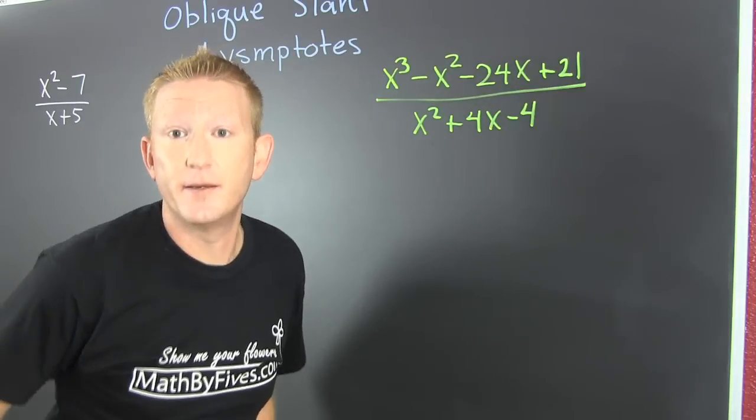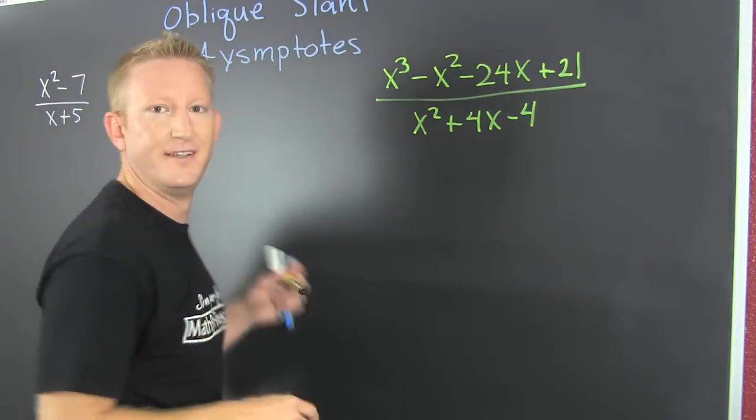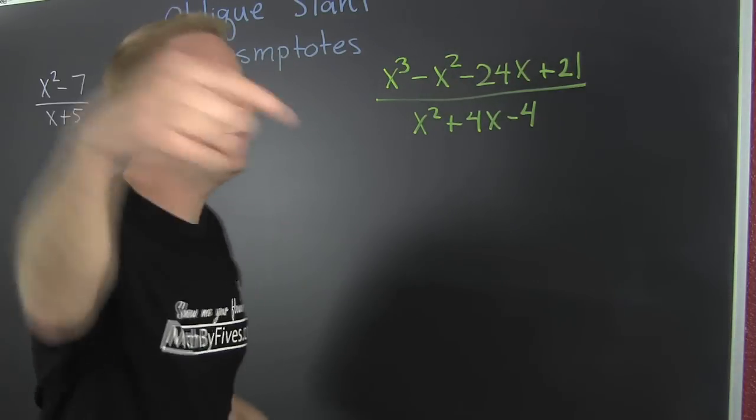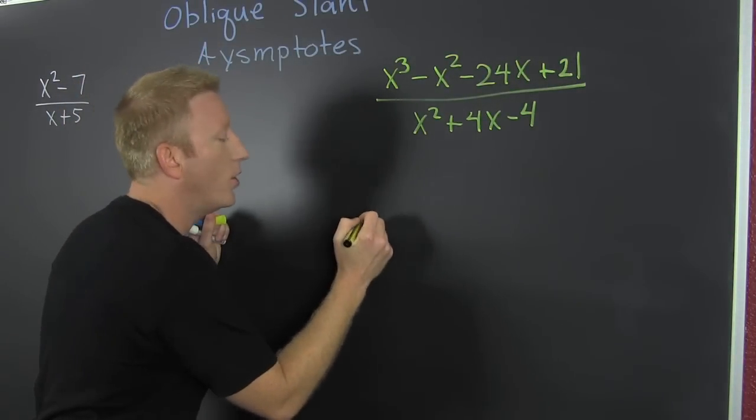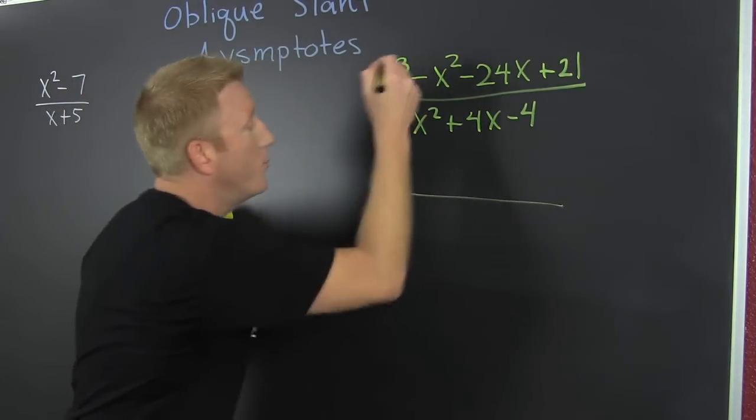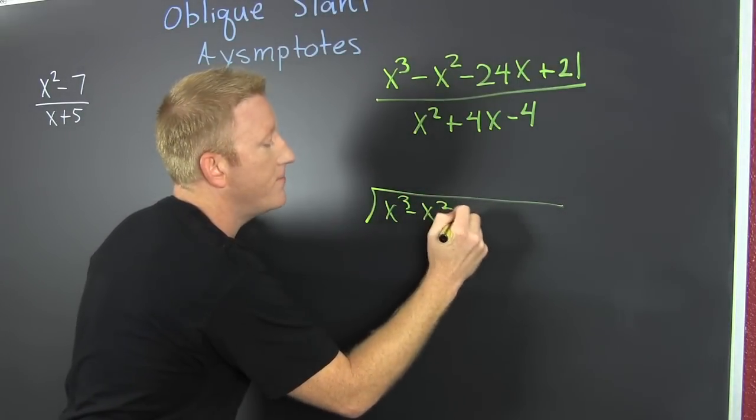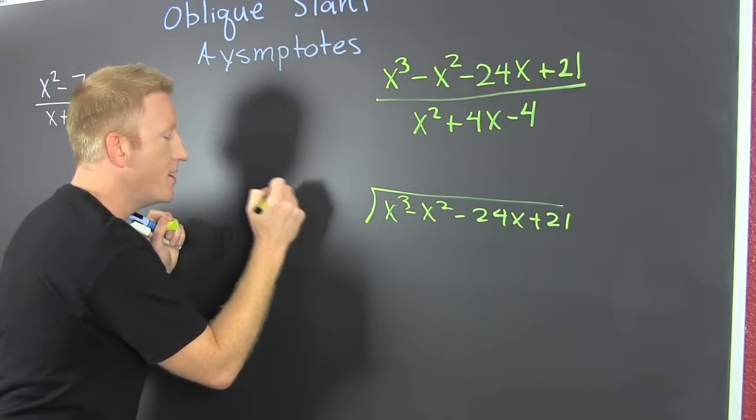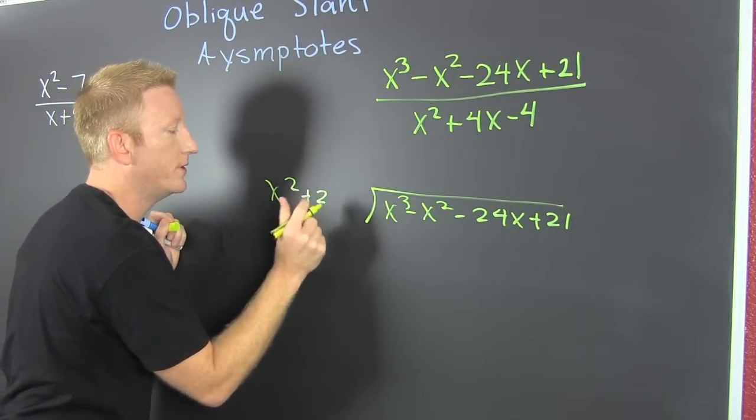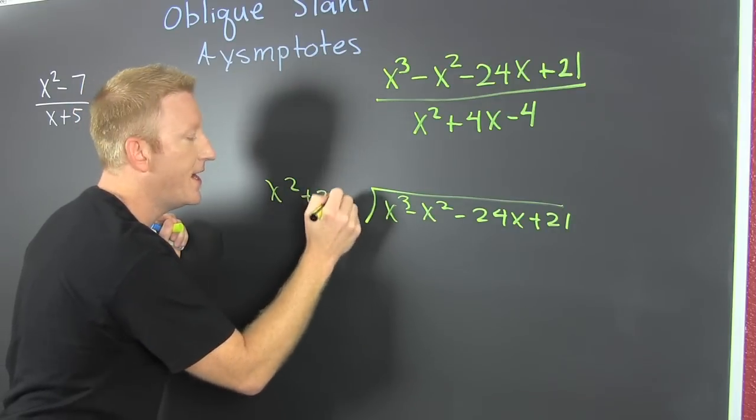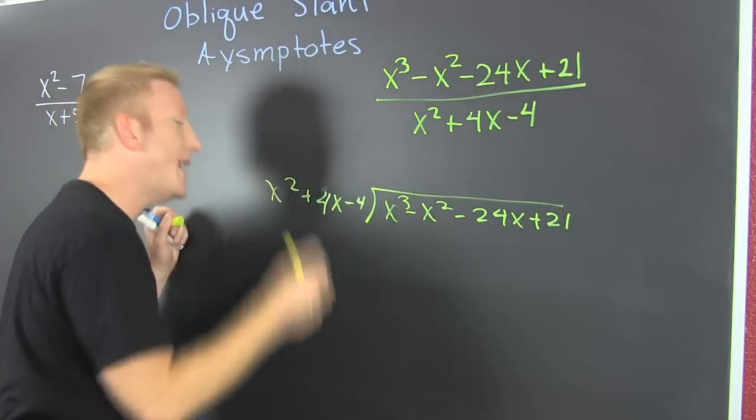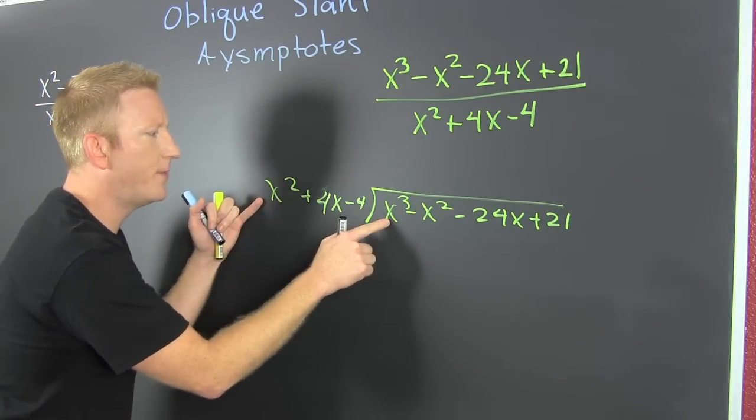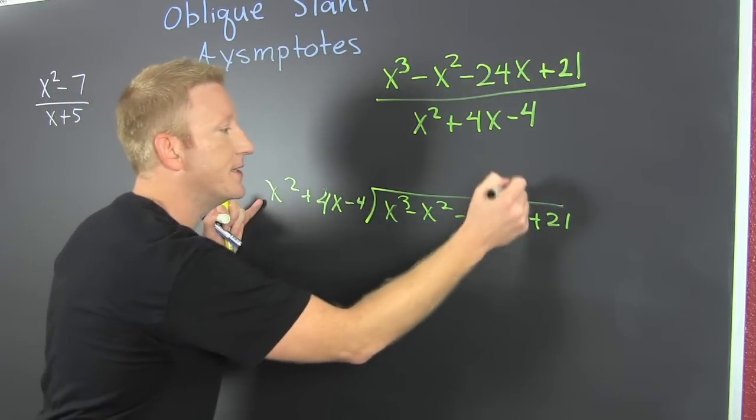a slant asymptote, sometimes called oblique. Okay, we gotta go old school. We put x³ - x² - 24x + 21 in the house, we put x² + 4x - 4 there, and then we ask ourself, oh self, what do I multiply x² by to get x³? And it's gonna be a single